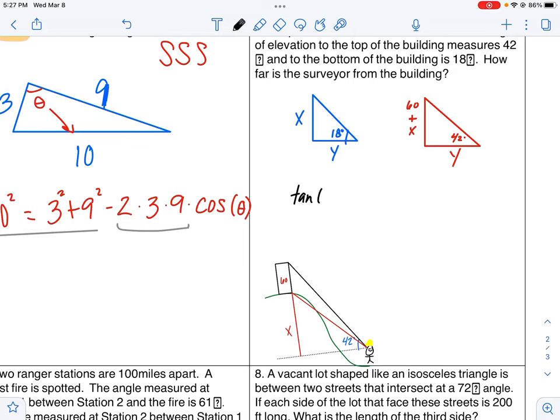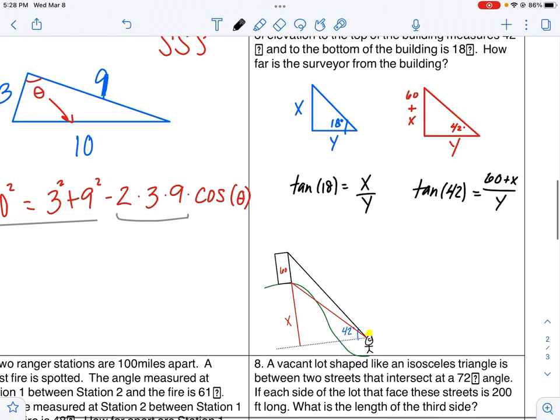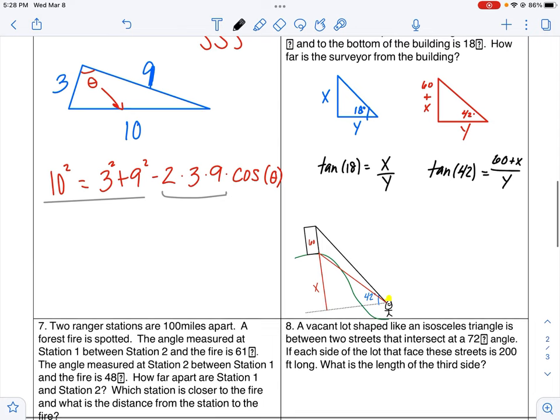So you'd have tangent of 18 equals x over y. And then you would have the tangent of 42 equals 60 plus x over y. And from here, what you could do is you could solve for x, set the equations equal to each other, and then solve for x and solve for y.